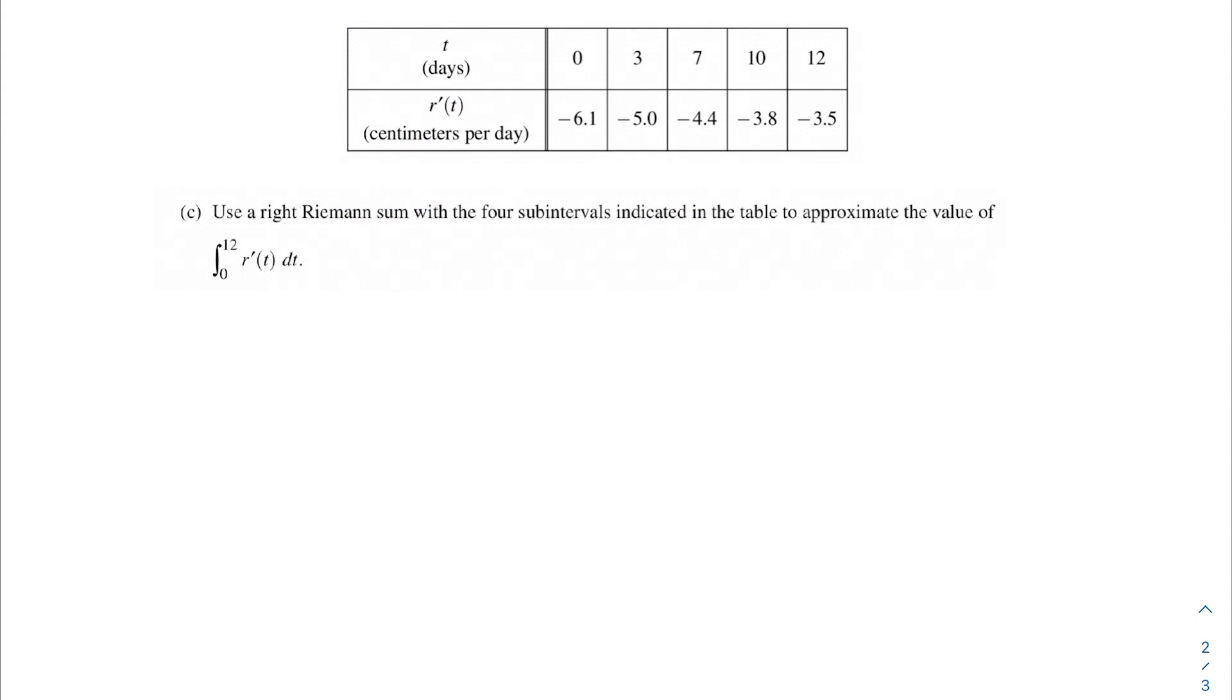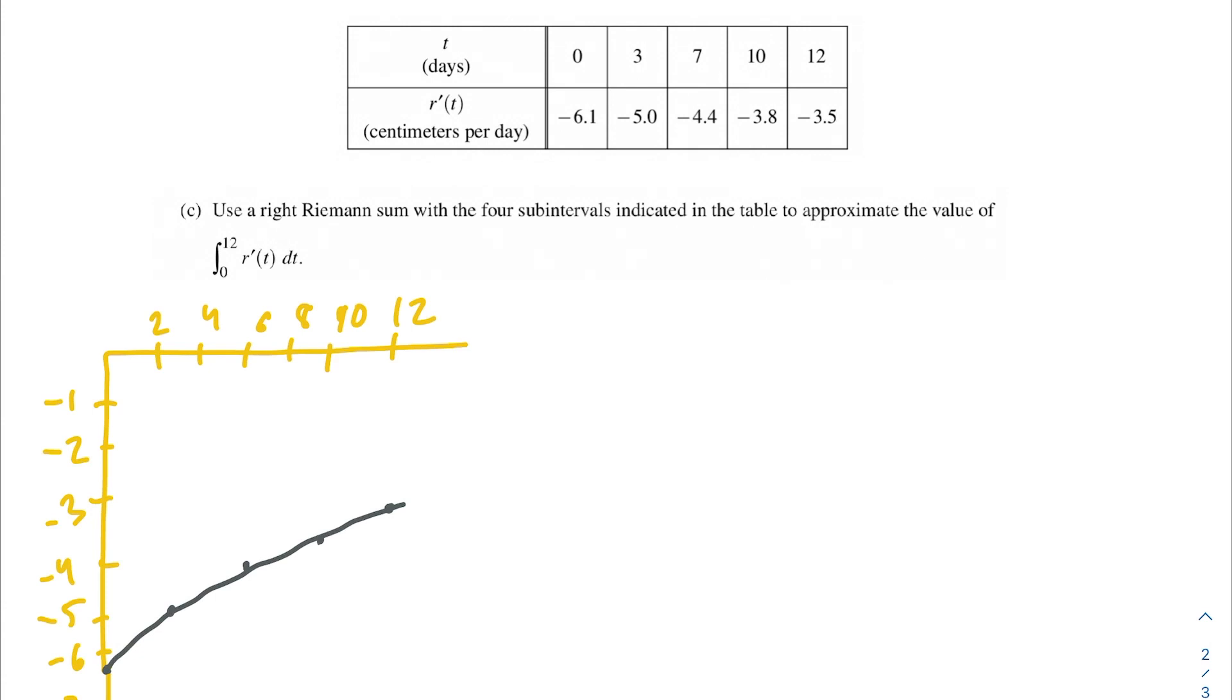Next problem. Here we're being asked to do a right Riemann sum with four subintervals to approximate the value of the integral from 0 to 12 of r'(t) dt. I went ahead and graphed the points from the data table. This is most likely what this might look like, but I'm not going to use this for anything other than just demonstrating what we're doing with this right Riemann sum. So remember that we're breaking up the area under the curve into these rectangles, and when we use a right Riemann sum, what we do is we use the right height, as opposed to a left Riemann sum, we would start with the left height. So here is what our rectangles look like that we're going to be using to approximate the area under the curve.